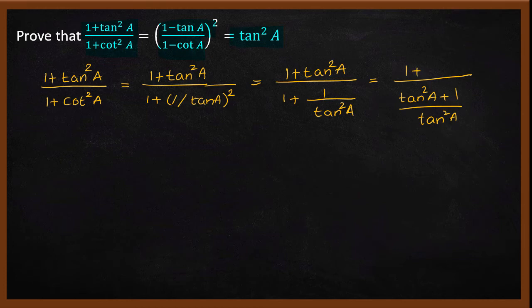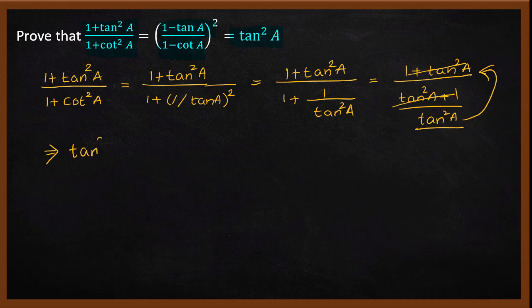Numerator 1 plus tan square a. This will simplify. Tan square a plus 1 and 1 plus tan square a cancel. Tan square a stays in the numerator. So, 1 plus tan square a divided by 1 plus cot square a equals tan square a.